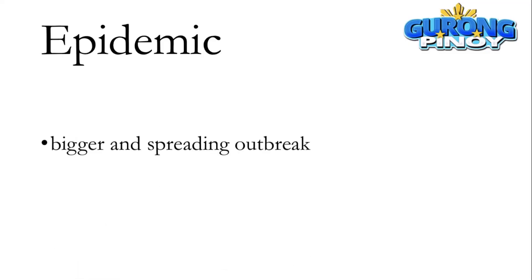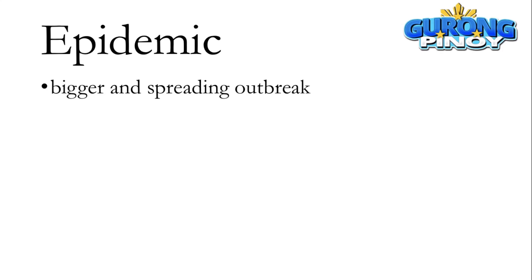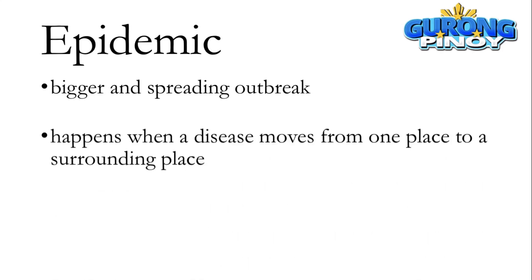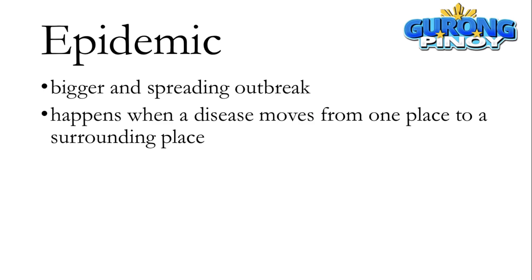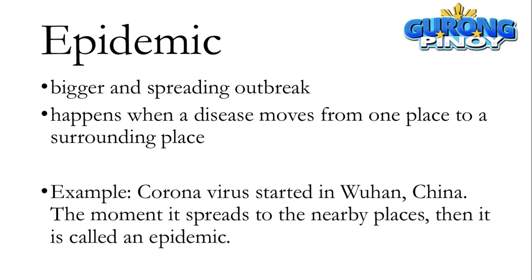Epidemic — this is a bigger and spreading outbreak. This happens when a disease moves from one place to a surrounding place. Example: coronavirus started in Wuhan, China. The moment it spreads to nearby places, then it is called an epidemic.